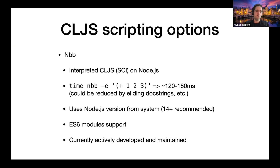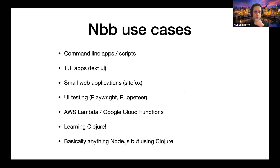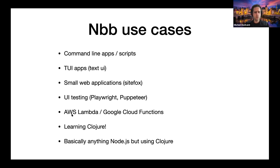There is also a small community in the Clojurians Slack in the NBB channel. Use cases where NBB would be good: command line apps, text UI apps, small web applications, UI testing, AWS Lambda, learning Clojure, and basically anything Node.js but using Clojure.